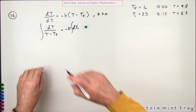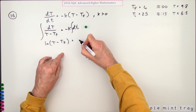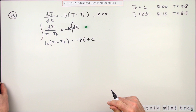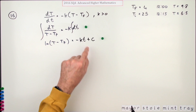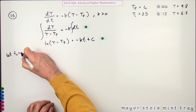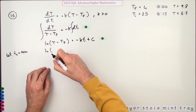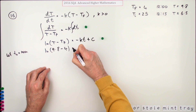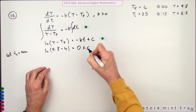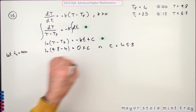Integrating gives ln(T − T_f) = −kt + c, where I can safely use round brackets since that quantity is never negative. That earns a mark. Since I only care about time, I can leave it in this logarithmic form without tidying up. Now let t0 = noon (t = 0). At noon, temperature was 9.8 degrees, so ln(9.8 − 4) = 0 + c, giving c = ln(5.8). That earns a mark.